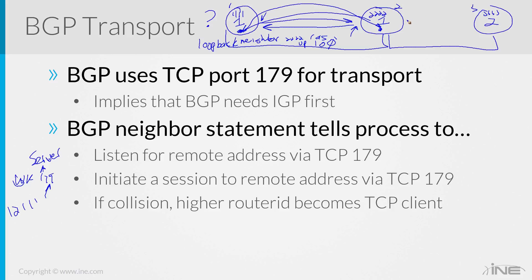With EBGP, the same concept applies. With EBGP, you're not going to peer off of a loopback — you can, absolutely, and that's typically how you get load balancing in place. But typically when peering with EBGP, you're going to be peering off the IP address that is directly connected to the link you're trying to peer on. And that's going to be how you get operations up and running. We'll see this when we actually get into setting up EBGP and IBGP.